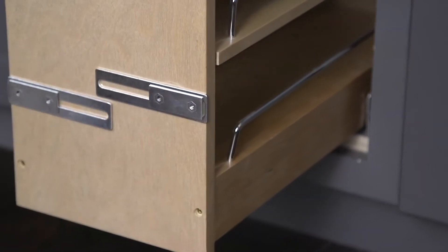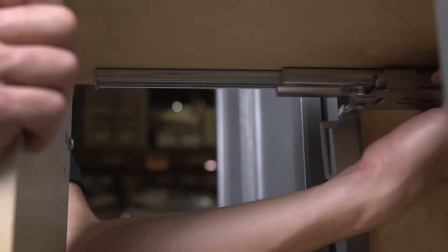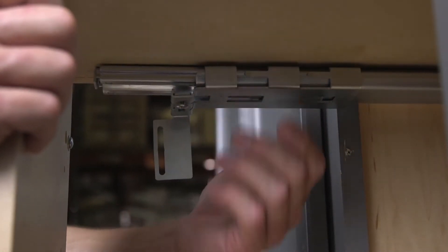Carefully pull the organizer partially open to gain access to the upper slide. Firmly grasping the upper slide, tap it against the back of the cabinet. The rear bracket should make small indentations in the back of the cabinet.